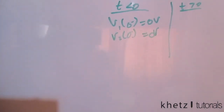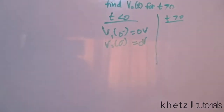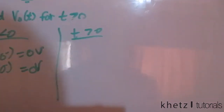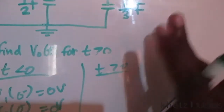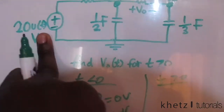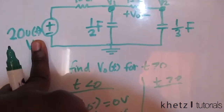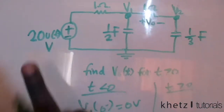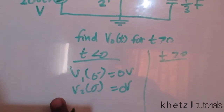Now that we have the initial conditions, we move to time greater than zero. The source is now active, and we can do node analysis to find the derivatives of v1 and v2, which will help us ultimately solve for v1 and v2.